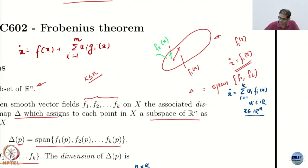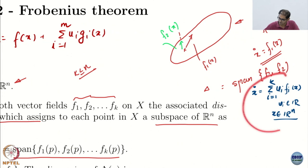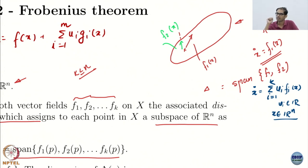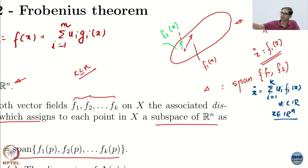If you forget the F — suppose there is no F — then you have a system which looks like x-dot equals sum of Gi times ui. At every instant, by choosing the control, where can you move? At every instant, what is the direction of your velocity? It is in the span of the Fi's. With whatever control you choose, instantaneously you can only move in the span of Fi.